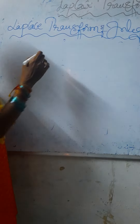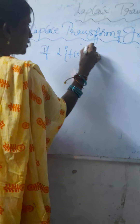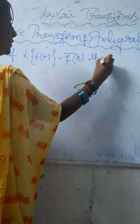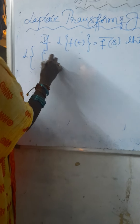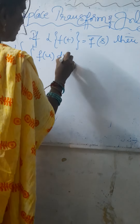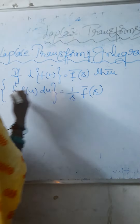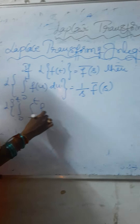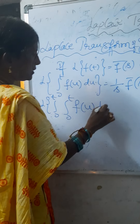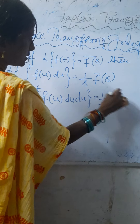What is the Laplace transform of integrals? If Laplace transform of f of t equals f bar of s, then Laplace transform of integral of 0 to t, f of u du, equals 1 by s times f bar of s. Then Laplace transform of the double integral of 0 to t of f of u du equals 1 by s squared times f bar of s.